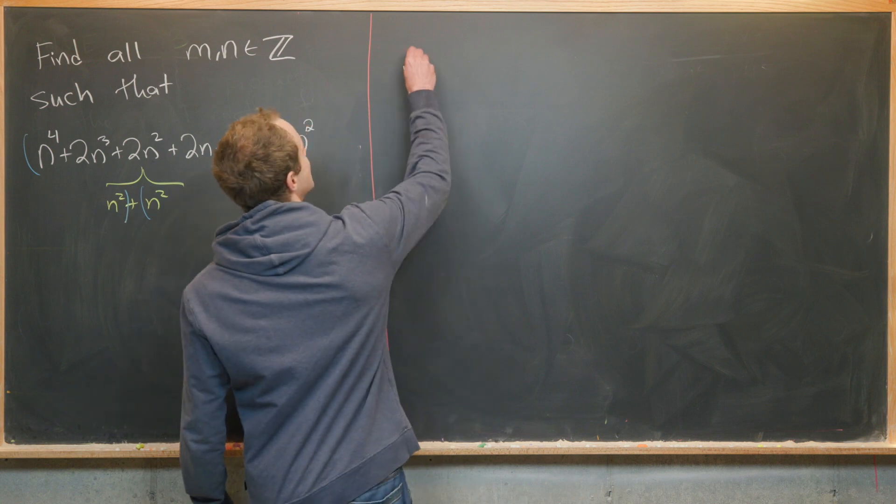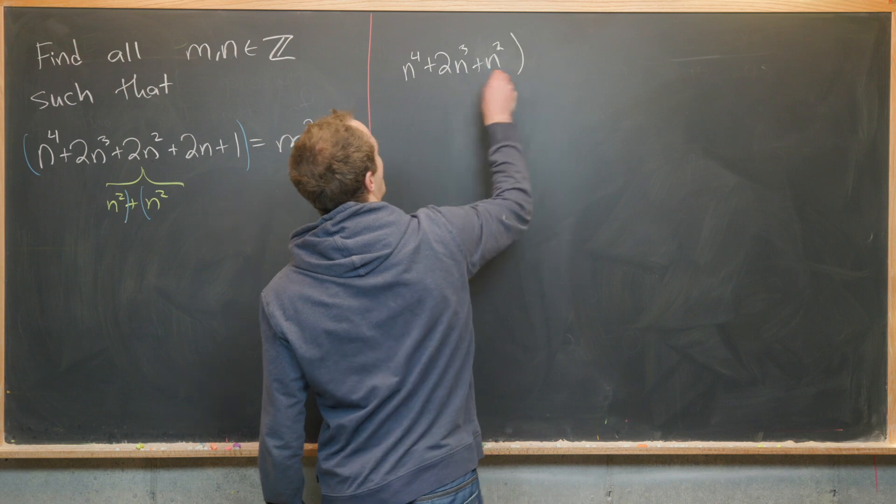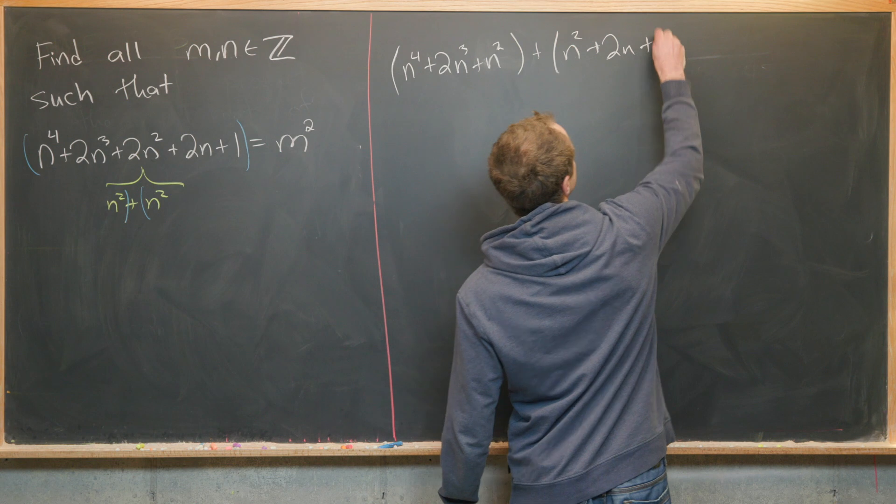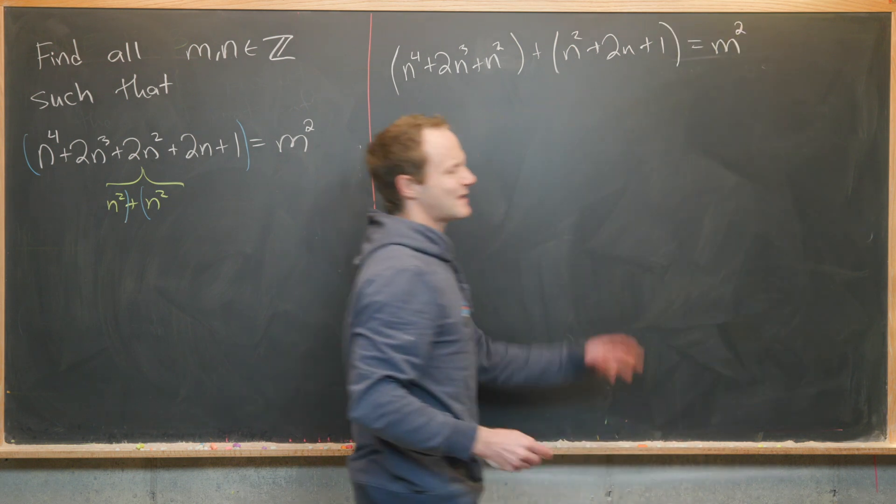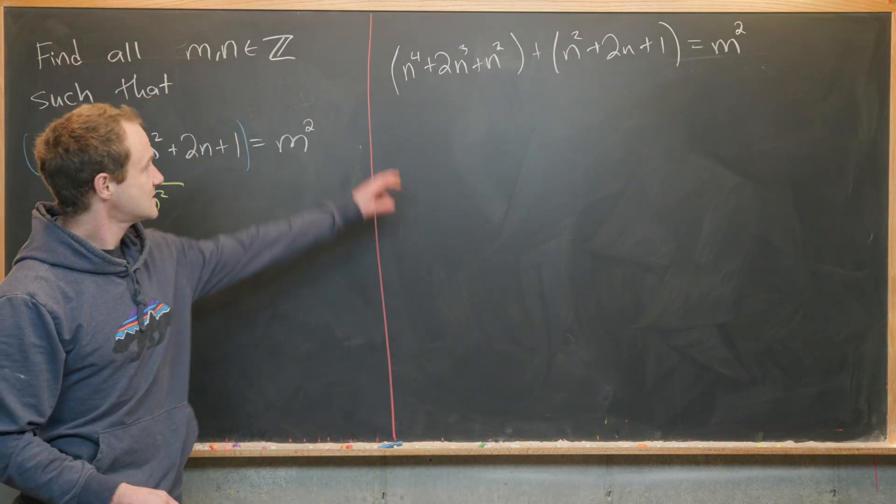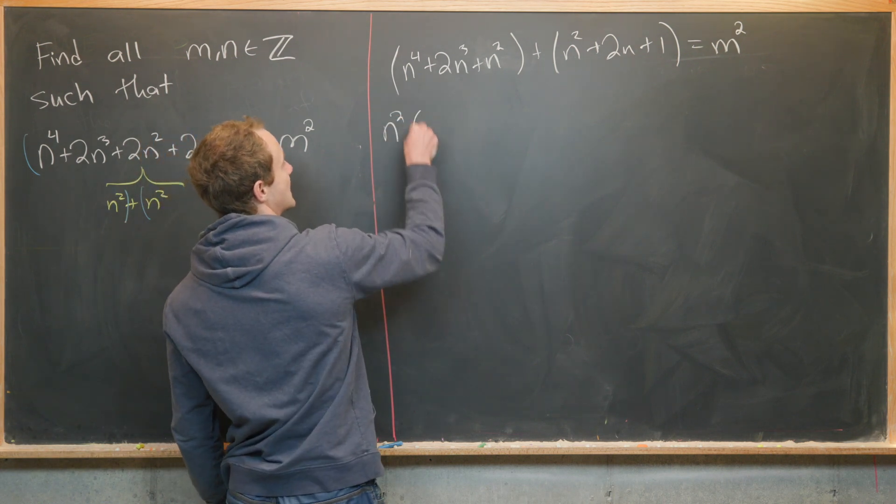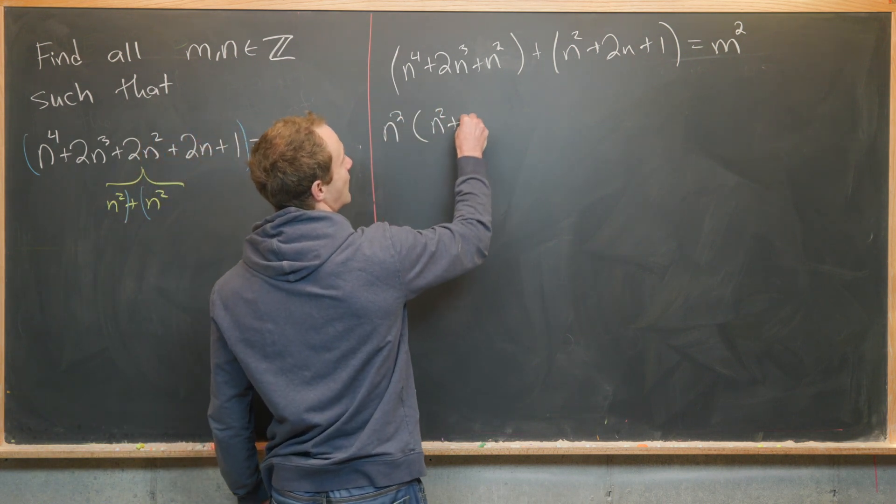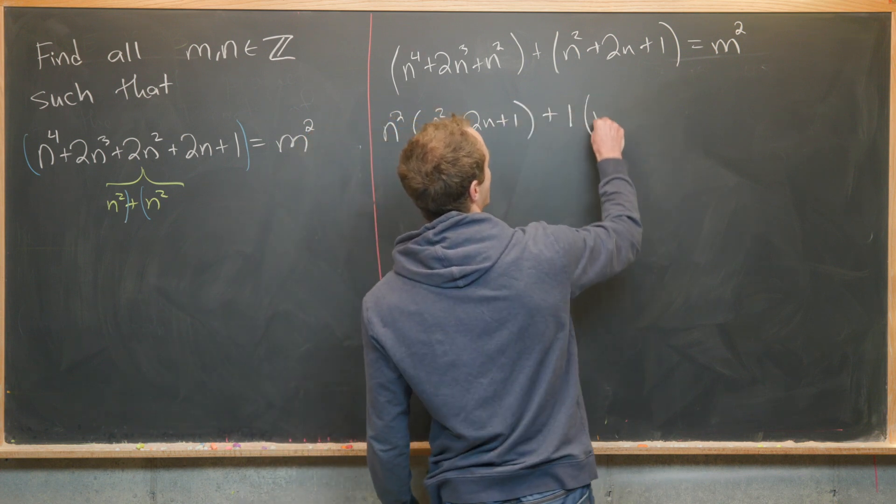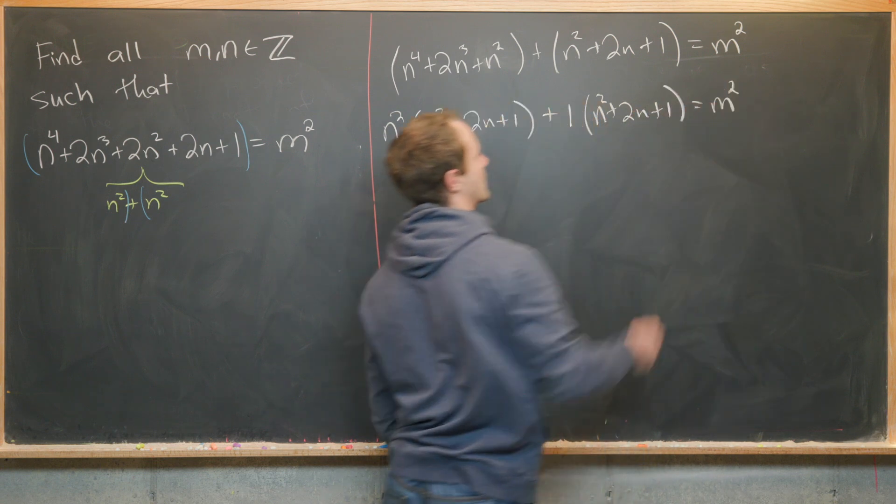We've got n to the fourth plus 2n cubed plus n squared, so I'll group those terms, plus n squared plus 2n plus 1 equals m squared. That's our original equation regrouped. Next, I'll factor n squared out of this term. That'll leave me with n squared times n squared plus 2n plus 1, plus 1 times n squared plus 2n plus 1 equals m squared.